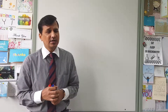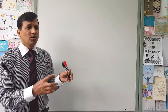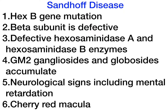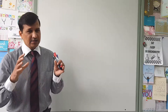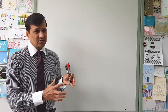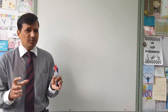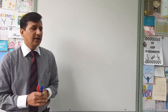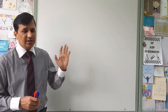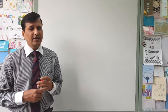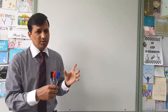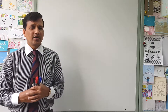In Sandhoff disease, there will be accumulation of both GM2 gangliosides and globosides, and the clinical signs and symptoms of Sandhoff disease are very similar to Tay-Sachs disease. The key difference between the two is in terms of the molecules accumulating: in Tay-Sachs disease only GM2 gangliosides accumulate, while in Sandhoff disease both GM2 gangliosides and globosides accumulate.